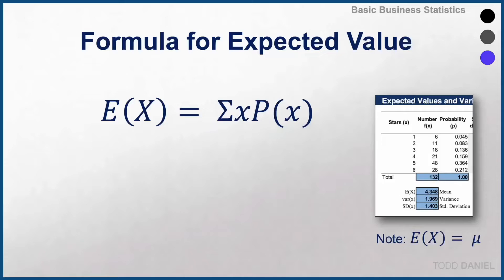Here's the formula for expected value. The expected value is notated as E(X), which equals the sum of X times the probability of X.